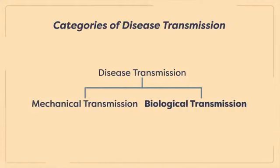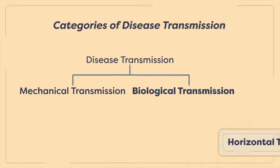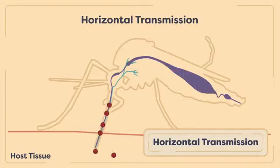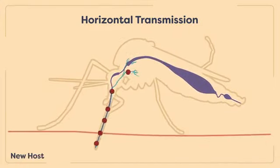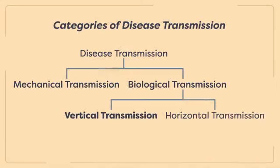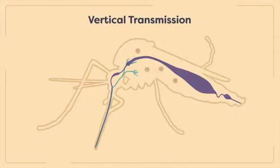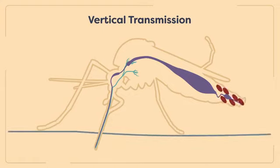Biological disease transmission can be further categorized into either horizontal or vertical transmission. Horizontal transmission involves the movement of disease-causing organisms between hosts and vectors, as well as between vectors. Vertical transmission occurs when disease-causing organisms are passed between generations of the vector — the disease-causing agents are passed from an adult female vector to her offspring, usually transmitted through infected ovarian tissues to the developing embryos, and can be maintained throughout the offspring's development into adulthood.